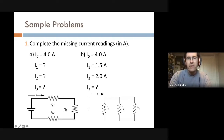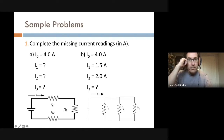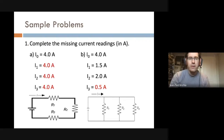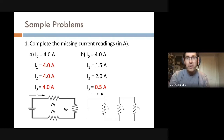For question 1b we have a parallel circuit. Four amps come from the battery — that's our budget. The first branch uses 1.5 amps and the second branch uses 2.0 amps, for a total of 3.5 amps used. That means the third branch gets whatever is left: 0.5 amps.